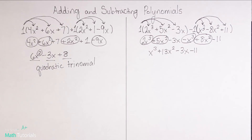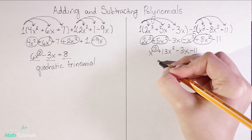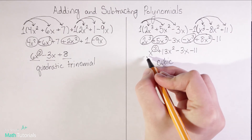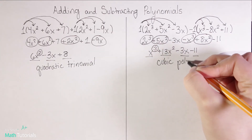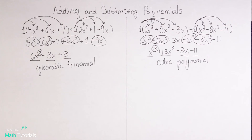Just for fun and review, I'm going to name this polynomial. The first name is based on its degree — the highest exponent is 3, so we call that cubic. The second name is based on how many terms it has: 1, 2, 3, 4 — and anything with 4 or more terms we just call polynomial. So this is a cubic polynomial, and the previous result was a quadratic trinomial. That is adding and subtracting polynomials in a nutshell. In my next video we're going to talk about multiplying polynomials, so it's going to be important to remember the difference between a binomial and a trinomial. This is Ms. Smith with Ms. Smith's Math Tutorials.